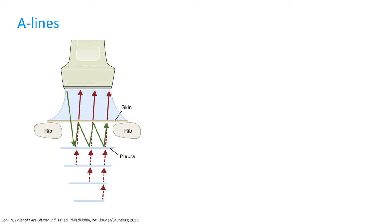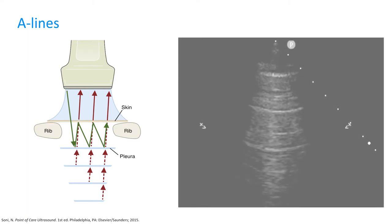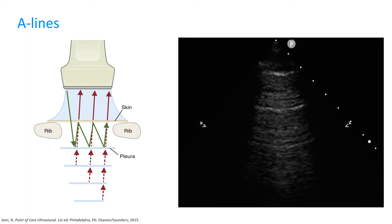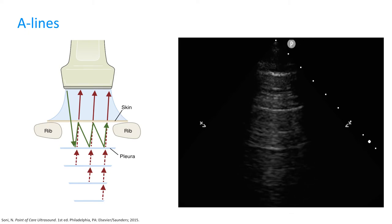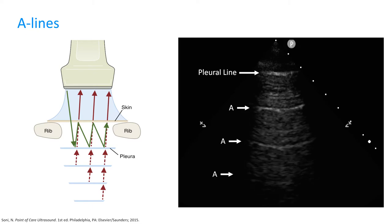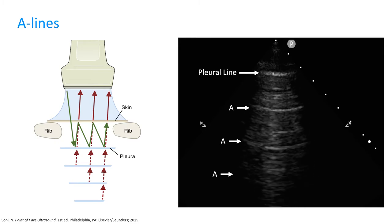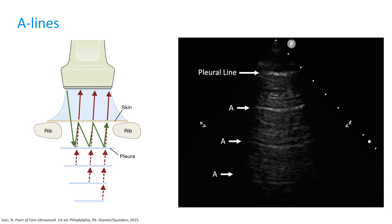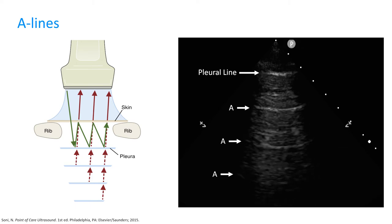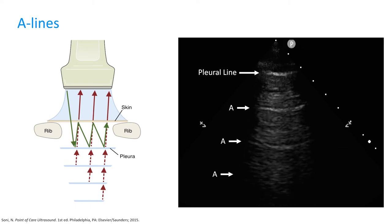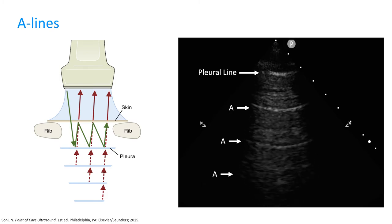This is what real A-lines look like. A-lines are nothing but the artificial repetition of the pleural line below the pleural line. To be valid, A-lines must meet the following criteria: they must be horizontal lines, equidistant from each other, and motionless — that is, they do not move much while the patient breathes in and out. The clinical significance of A-lines is that they indicate the absence of pulmonary edema or consolidations, because if we had either, we would never see A-lines.